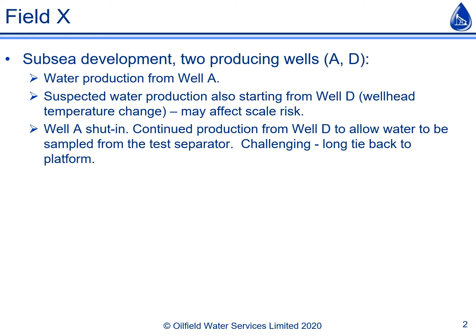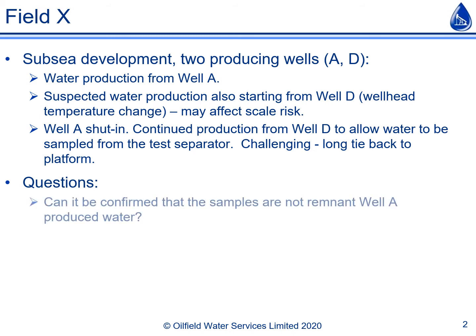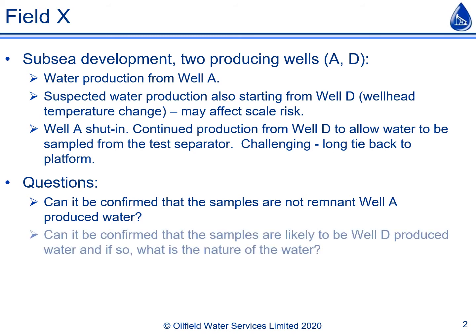This was particularly challenging because the well had a very long tie back to the platform. After collecting the water sample there were two questions that required answers. Firstly, can it be confirmed that the samples were not remnant well A produced water — that is, are they representative of well D? And if so, what is the nature of the water being produced from this well?